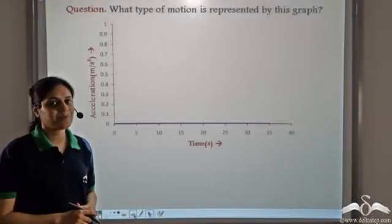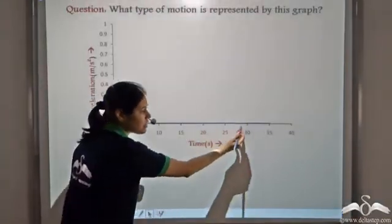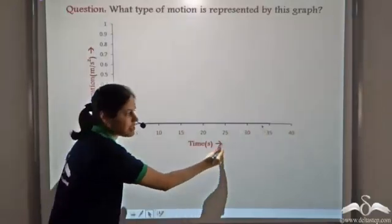What type of motion is represented by this graph? We see that this is the graph. As time increases, acceleration is zero.